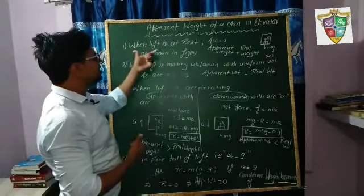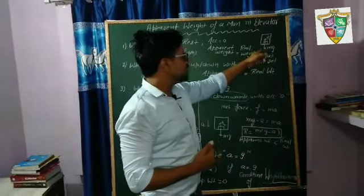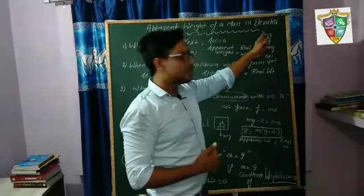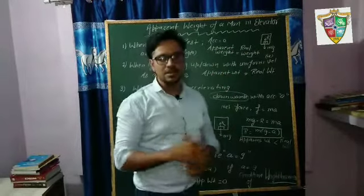So first case, when lift is at rest, this is the case in which weight of the object mg is balanced by the normal reaction. In this case, apparent weight is equal to real weight because there is no acceleration in the lift.